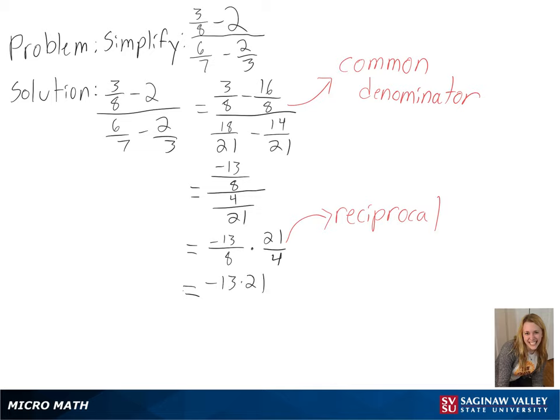And since we cannot simplify the numerator anymore, we can multiply this out, and we get negative 273 over 32 as our final answer.